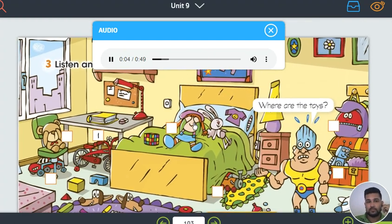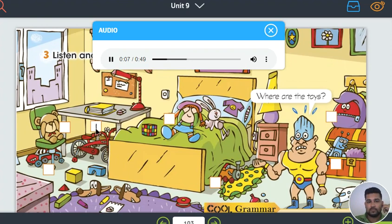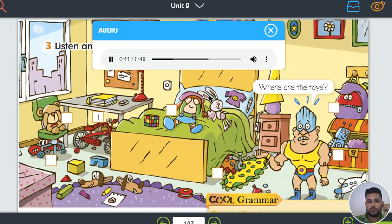Track 77. Number 1. The bike is under the table. Number 2. The robot is in the box. Number 3. The doll is on the bed. Number 4. The teddy bear is on the chair. Number 5. The train is under the bed. Number 6. The car is under the chair. Number 7. The ball is in the school bag.